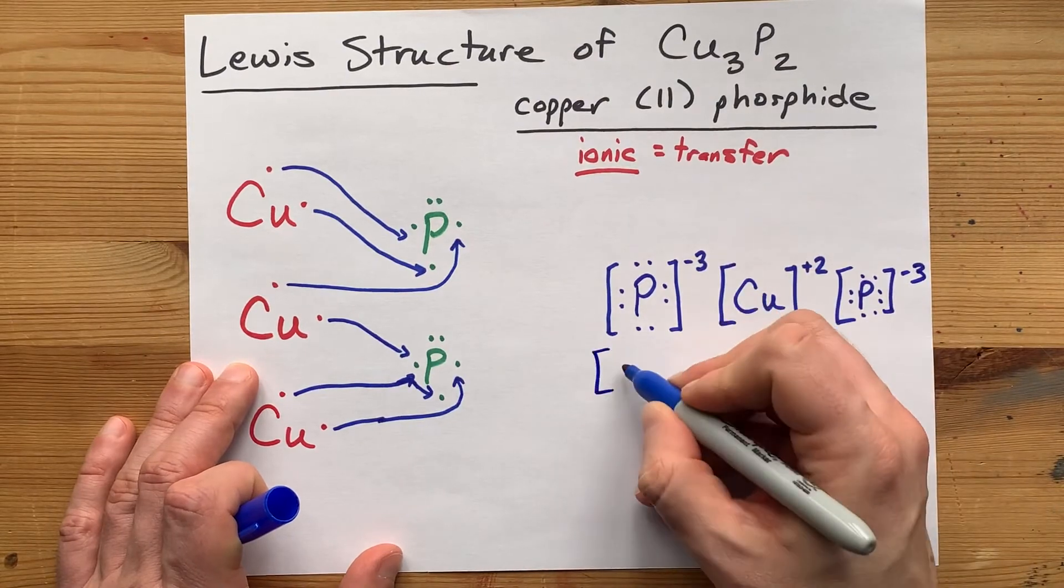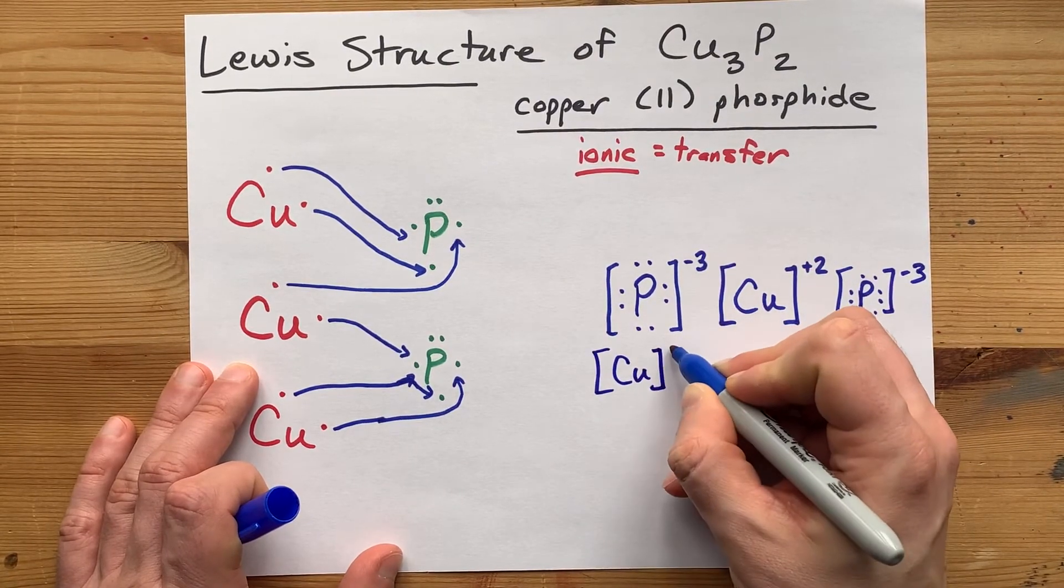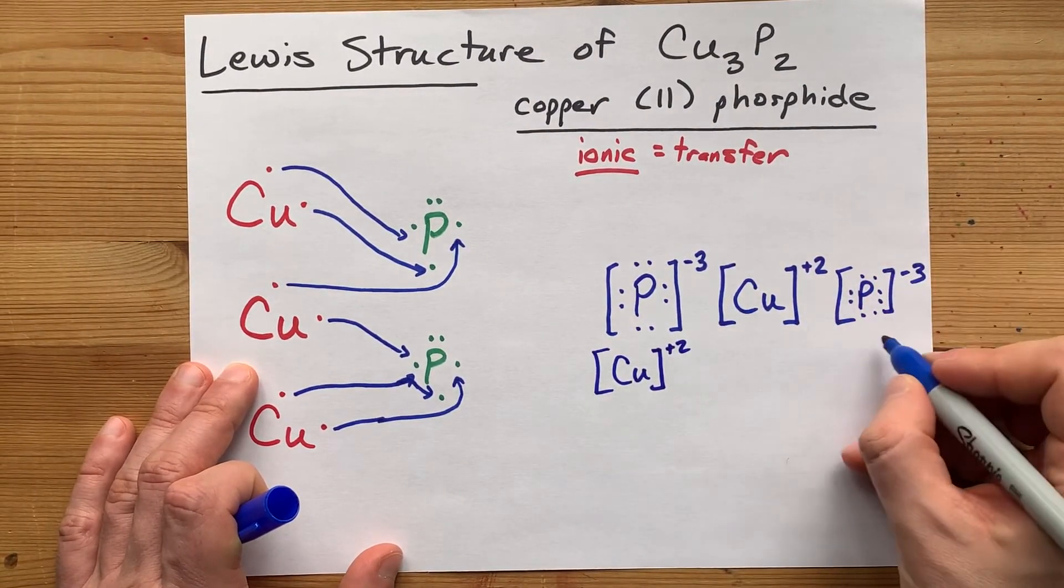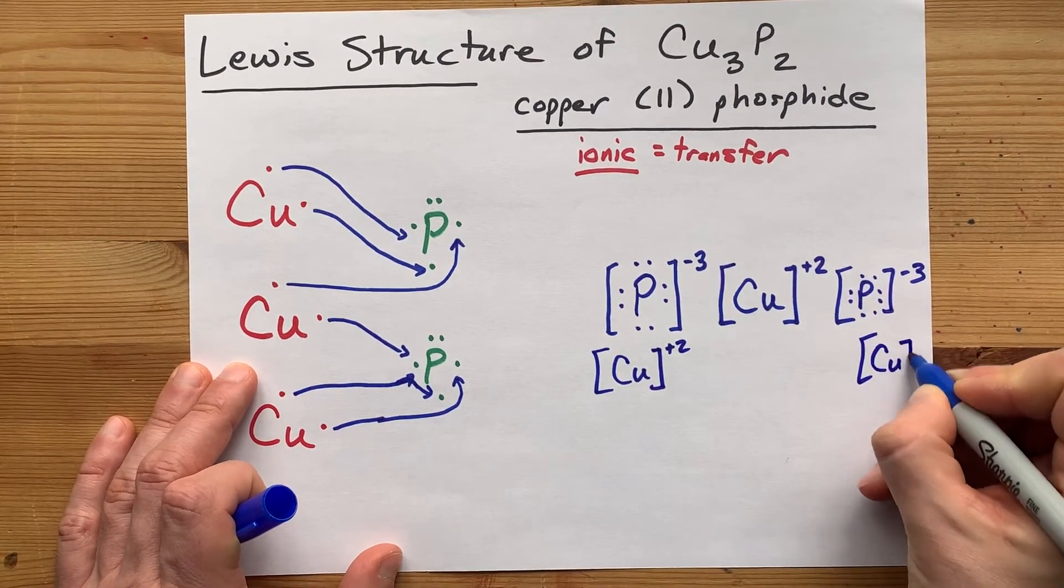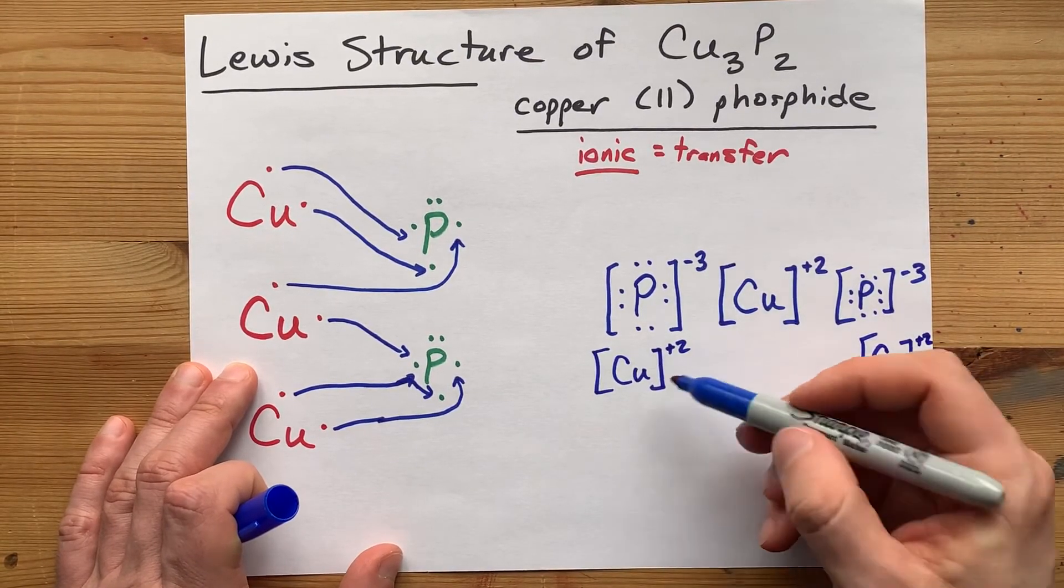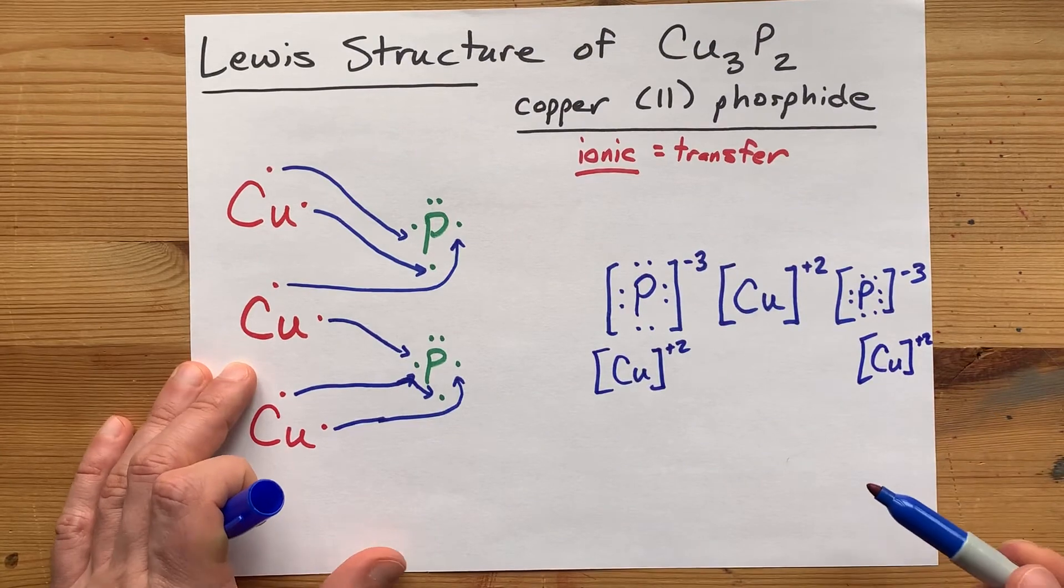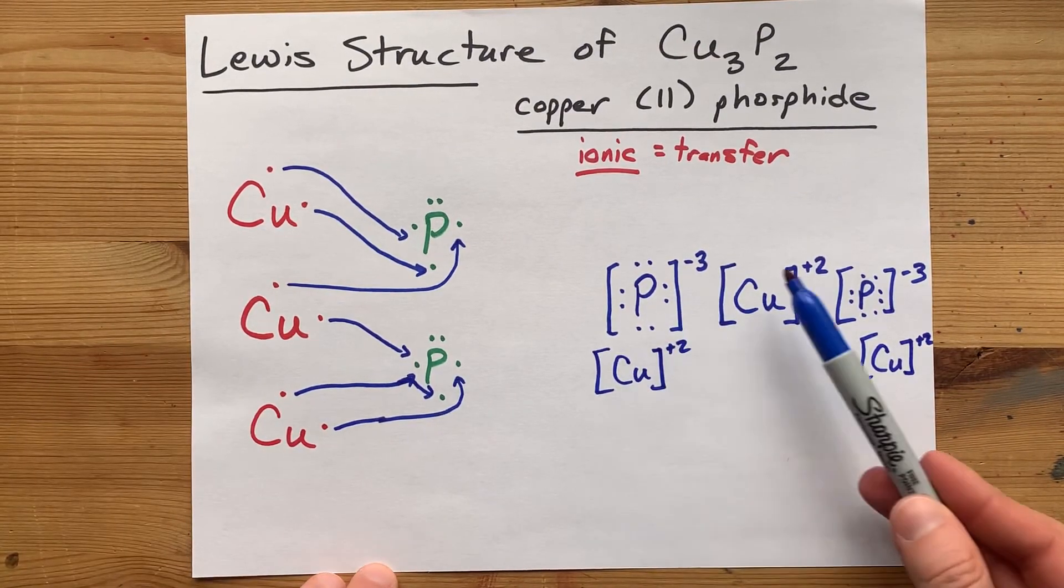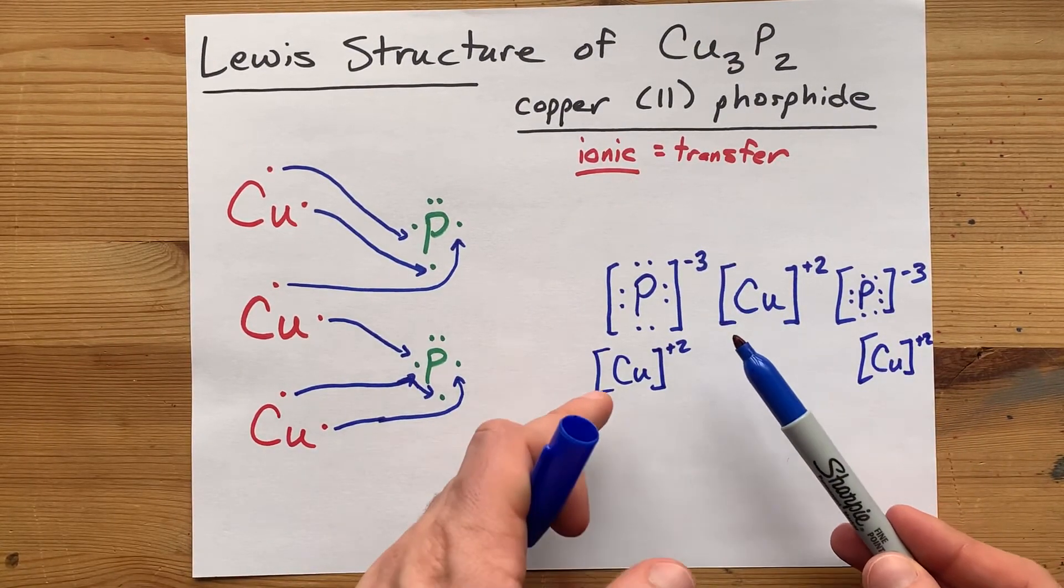And we're supposed to have three coppers in the end. There's a second one, there's a third one. I like alternating my plus and minus charges, by the way. And here is my completed Lewis structure for copper(II) phosphide.